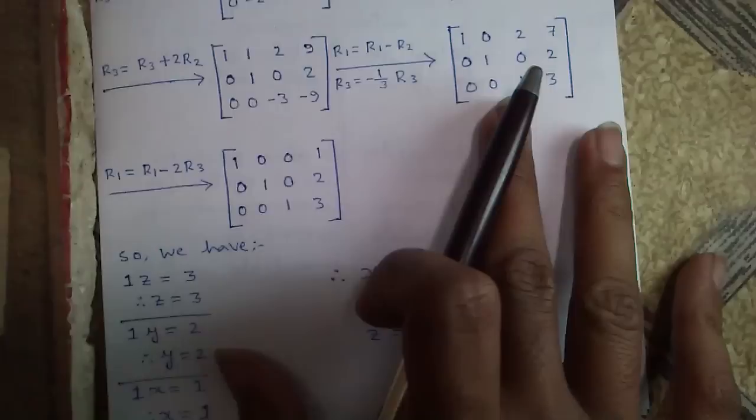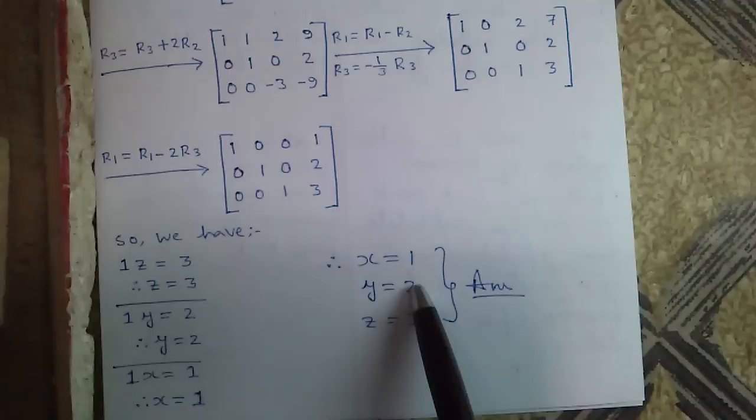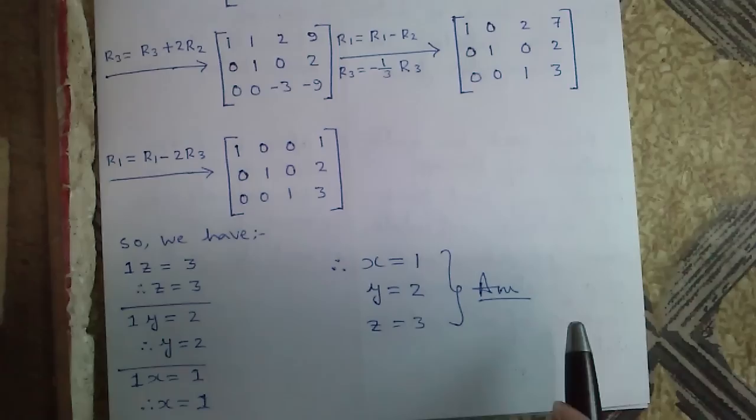Now we have got an identity matrix. So 1 times z equals 3, therefore z equals 3. 1 times y equals 2, therefore y equals 2. And 1 times x equals 1, therefore x equals 1. So x equals 1, y equals 2, and z equals 3 — this is our required solution obtained by Gauss-Jordan elimination method.